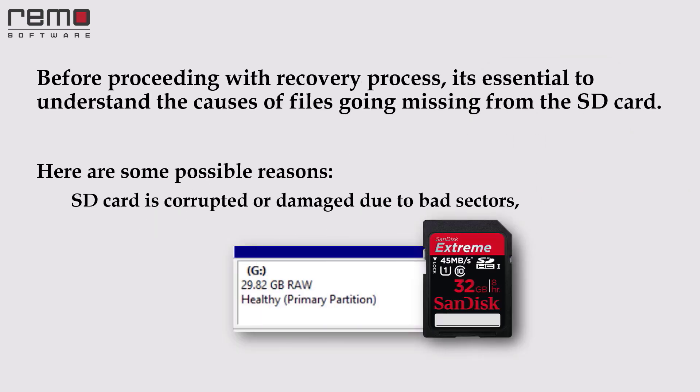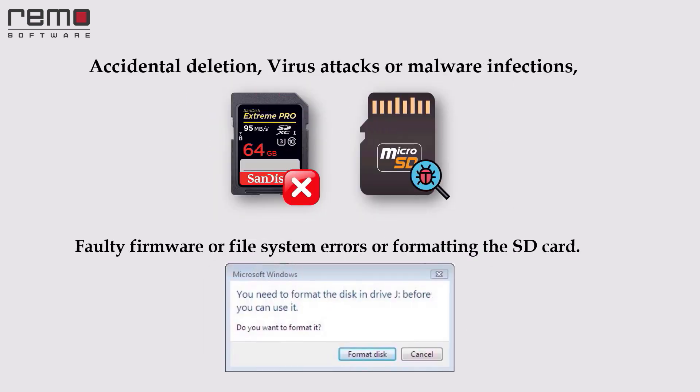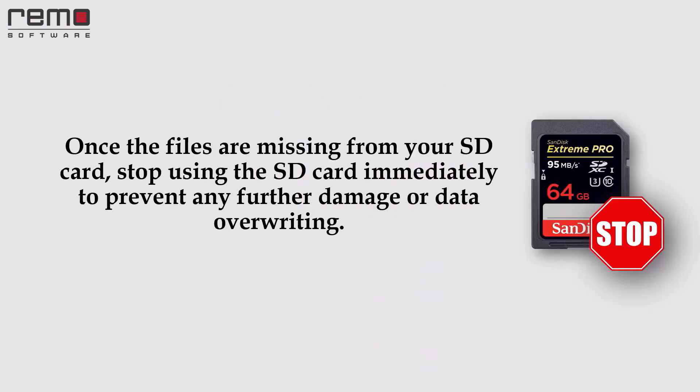Before proceeding with the recovery process, it's essential to understand the causes of files going missing from the SD card. Here are some possible reasons: SD card is corrupted or damaged due to bad sectors; files are hidden; write-protected SD card; accidental deletion; virus attacks or malware infections; faulty firmware, file system errors, or formatting the SD card.